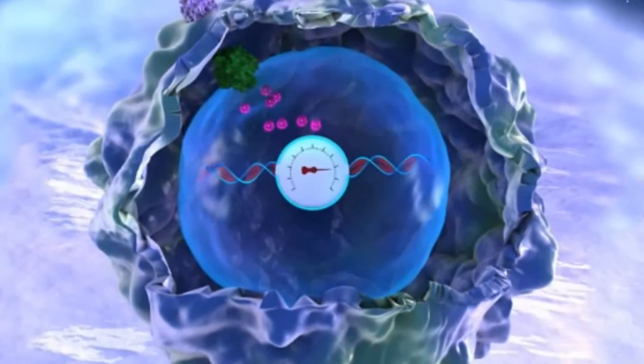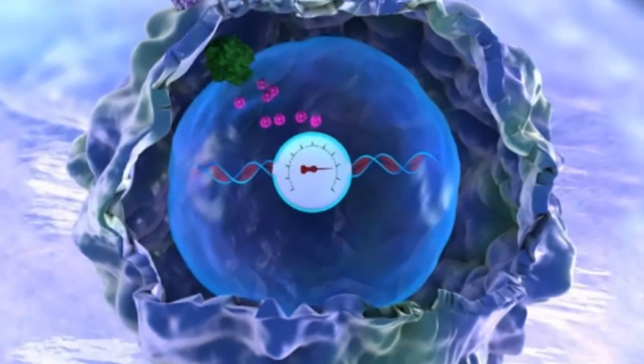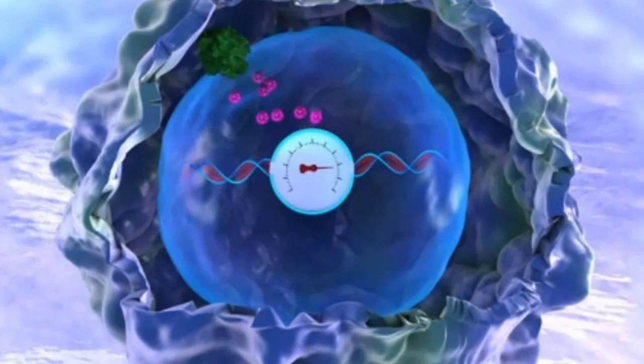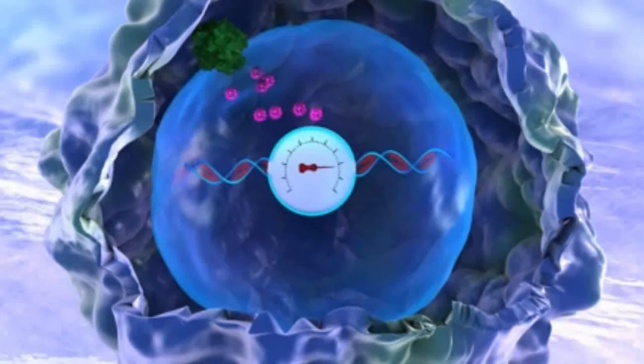The researchers also showed that they could engineer cells to detect and record more than one input, by producing multiple self-targeting RNA guide strands in the same cell. Each RNA guide is linked to a specific input and is only produced when that input is present. In this study, the researchers showed that they could record the presence of both the antibiotic doxycycline and a molecule known as IPTG.